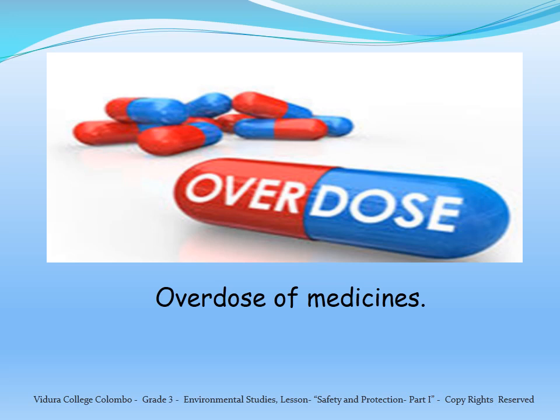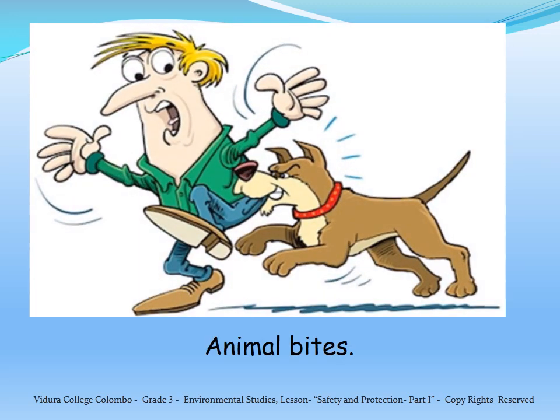Number 4: Overdosage of medicine. When taking medicine, you must take them under the supervision of adults. If you take an overdose of medicine, it can harm your life. Number 5: Animal bites. If you have a pet at home or if you are playing with a strange animal, you should be very careful. Animals such as dogs and cats can bite us. It is dangerous because it can harm our body and can spread dangerous diseases like rabies.